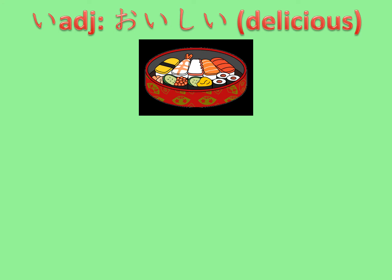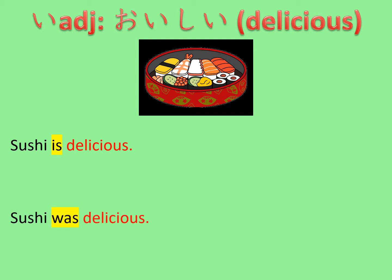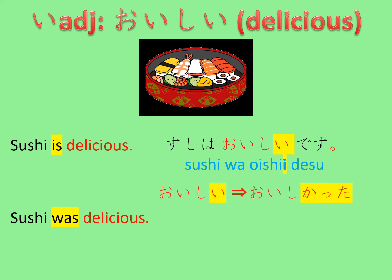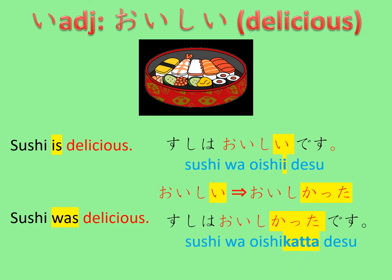Let's start with an i-adjective: oishii, which means delicious. What we want to do here is to change 'sushi is delicious' to 'sushi was delicious.' Sushi is delicious is 'sushi wa oishii desu.' To change that into a past statement, you need to change the ending -i of oishii into -katta. So the sentence becomes 'sushi wa oishikatta desu.'